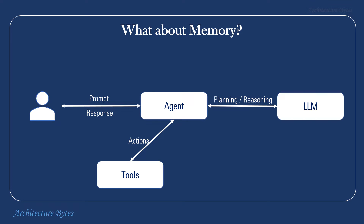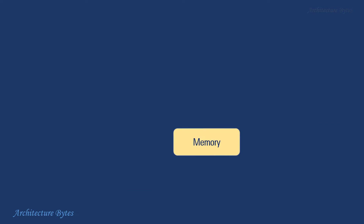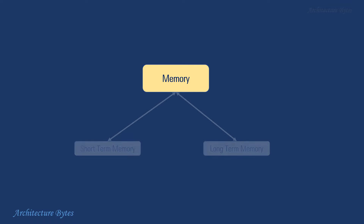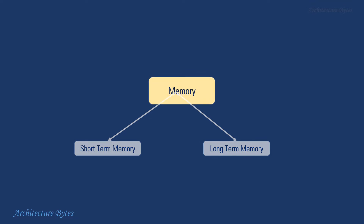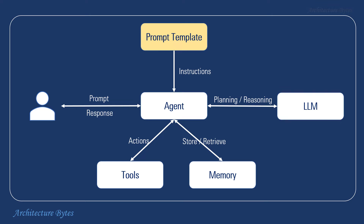We also need memory to enhance the capability of the agent, so let's add that. Now our agent can remember things. We can use both short and long term memory here. We must have a way to instruct the agent, so let's add a prompt template, which is nothing but a bunch of instructions. That's our overall agent architecture. This should give you a good idea of the key components an agent works with. The central agent block can also be called the agent core or simply orchestrator — we'll just call it agent for simplicity.